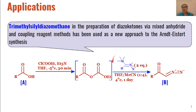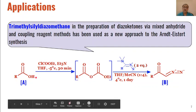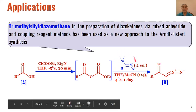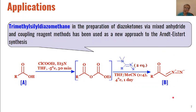Similarly, trimethylsilyldiazomethane (TMS-diazomethane) can also be used for the synthesis of alpha-diazoketones as product. The overall reaction is that first these carboxylic acids are activated to produce keto esters as intermediates. These keto esters react with TMS-diazomethane and are converted into diazoketones. These diazoketones then interact with silver ions to give ketenes, and those ketenes can react with different nucleophiles to give different products — carboxylic acids, esters, or amides — depending upon the type of nucleophile used.